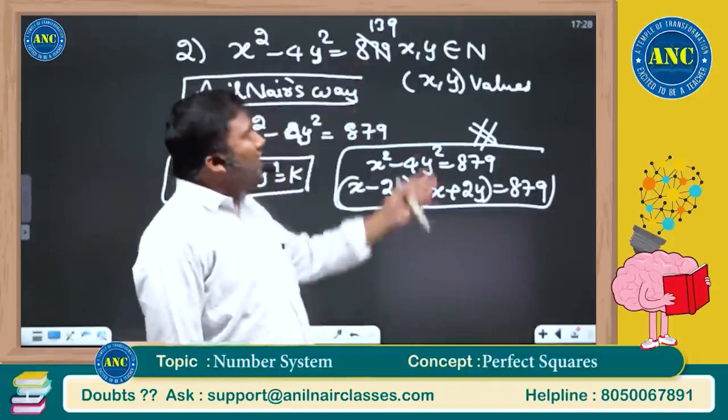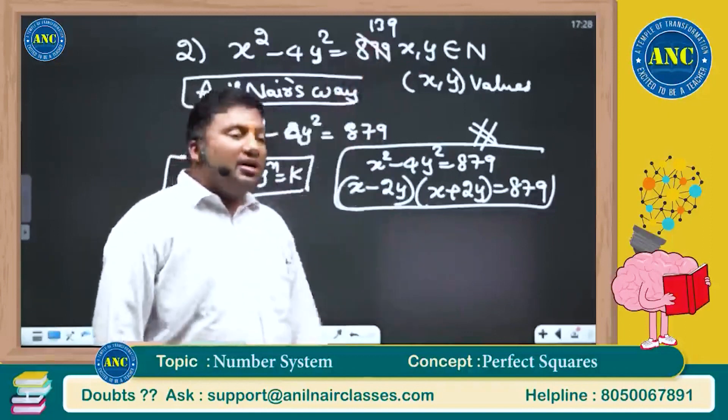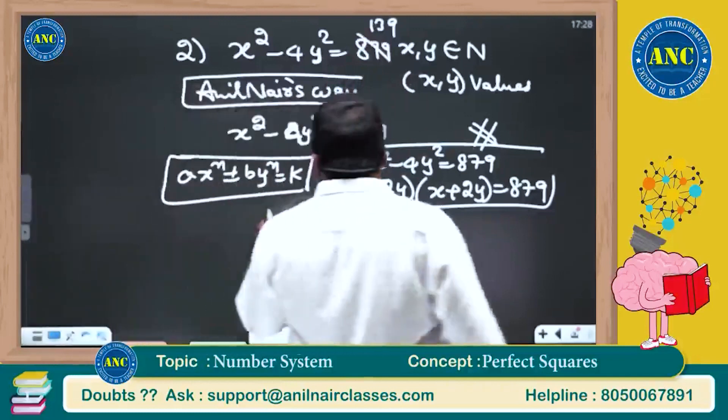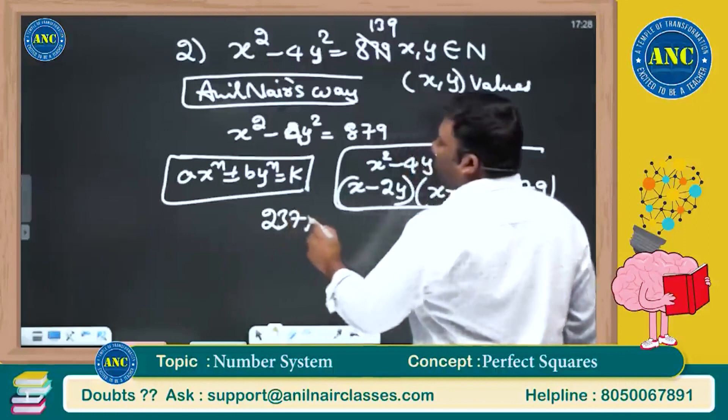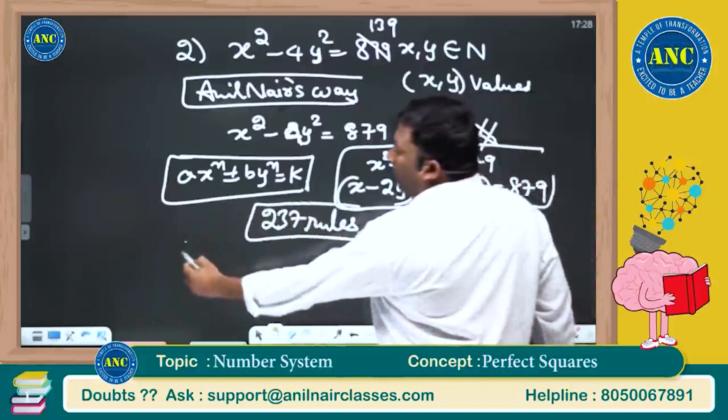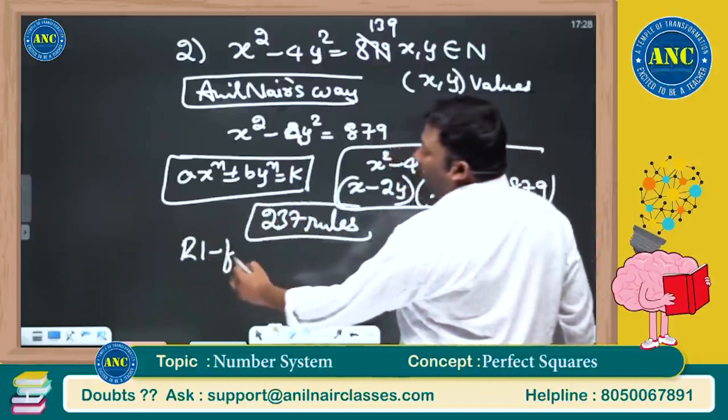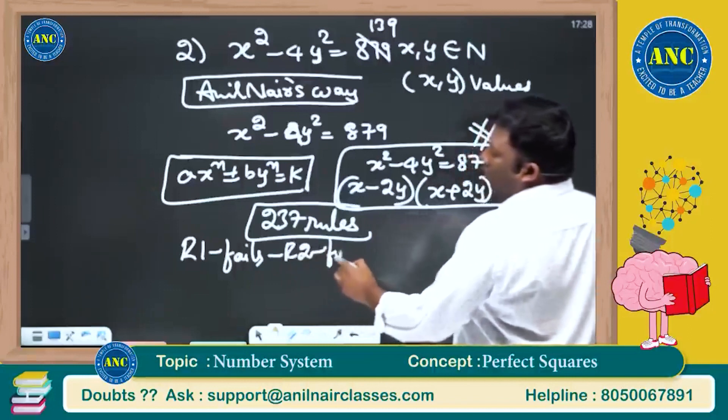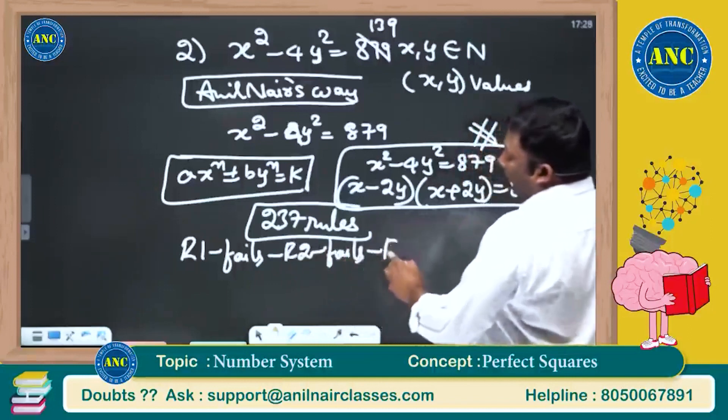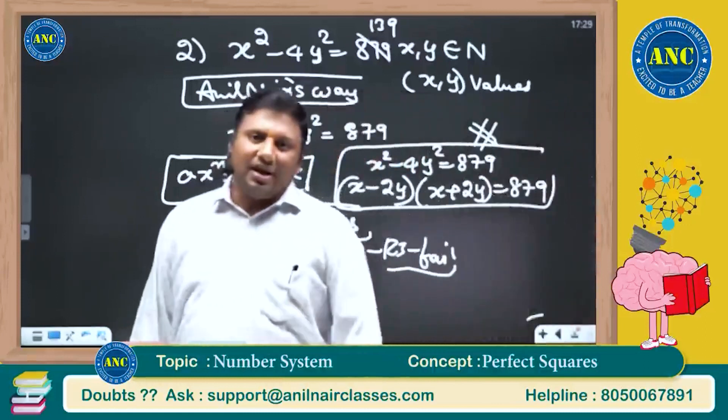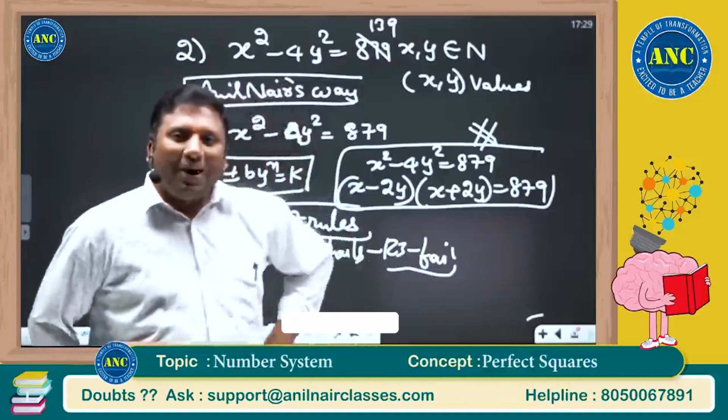How you have to check whether a number is a prime number or not? Just for your curiosity, there are 237 rules to check whether a number is a prime number or a composite number. Apply rule number 1, if it fails go to rule number 2, if it fails go to rule number 3, if it fails go to rule number 4. All 237 rules fails, then the number is said to be a prime number.